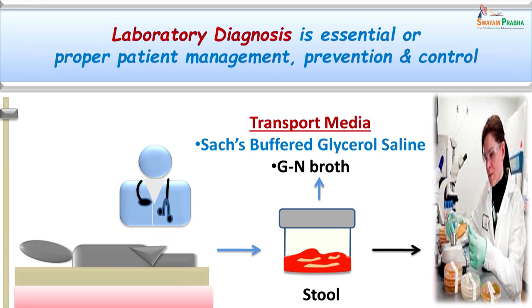Sachs buffered glycerol saline supports organisms in the log phase of bacterial growth so they can survive longer. Otherwise they would be killed by commensal bacteria, which convert the pH to a more acidic side — and acidic pH is detrimental to Shigella organisms, which are quite delicate pathogens.